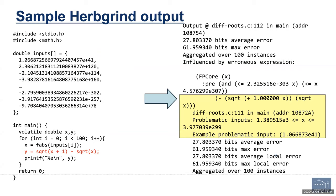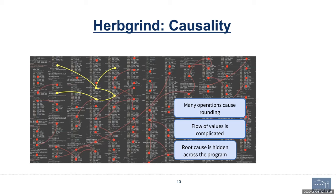This is a sample of what Herbgrind can report for you. The program on the left runs the main function on a set of inputs, and this report says there is a possible error on this line. The good things about it: it identifies the problematic statement, it tells you what the ranges are for the problematic inputs based on what it has seen, and it can give you an example problem input. It also does causality analysis. We find it useful, but you have to be patient and understand that it is very verbose.